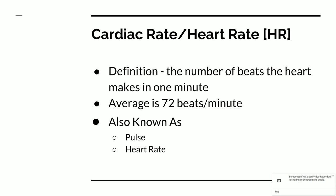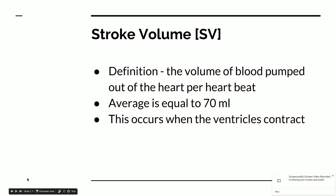We also know this as pulse and, of course, heart rate as we talked about. The second term is called stroke volume, represented by SV. This is the volume of blood pumped out of the heart per heartbeat. The average is equal to about 70 milliliters, and this occurs when the ventricles contract.